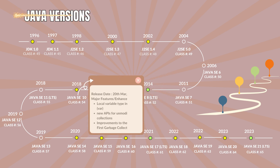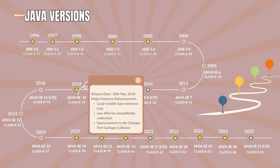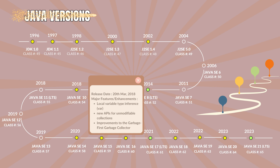Java 10.0 with the class file version 54. It was released on 20th March 2018. The major features and enhancements are local variable type inference with the var keyword, the experimental Java-based JIT compiler Graal, new APIs for unmodifiable collections, and improvements to the Garbage-First garbage collector.